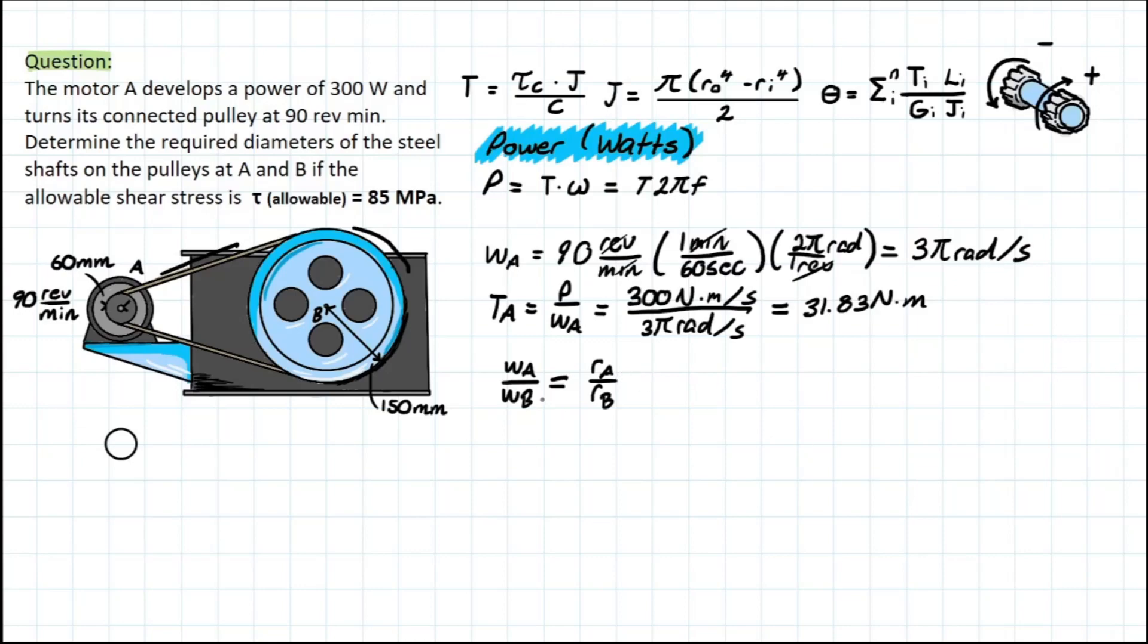So now using this relationship, why do we even need this in the first place? Well, we need to determine what the angular velocity is at B so that we can get the torque at B so that we can work back to this formula and find out what the diameters are for both of these shafts, because they both have different torques applied for these pulleys. And once again, that video will be coming soon to explain this concept a little bit better. But just for now, let's live with the fact that this relationship exists.